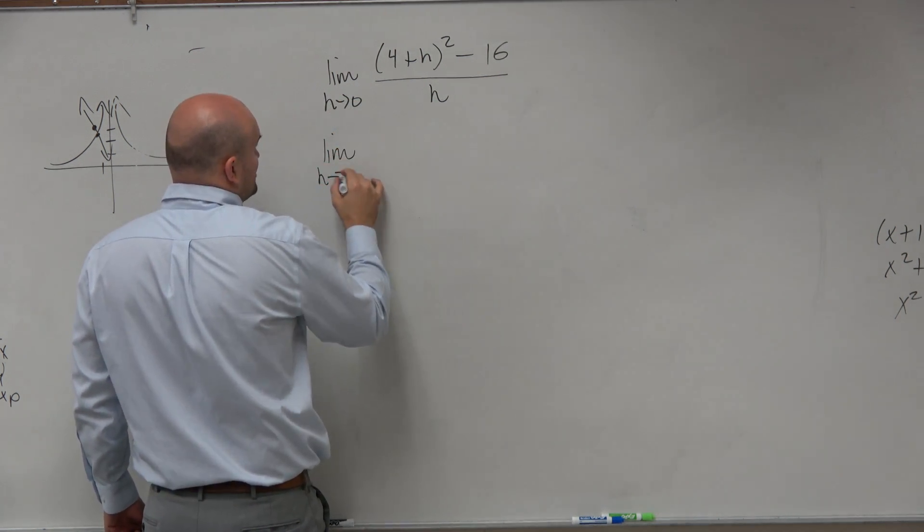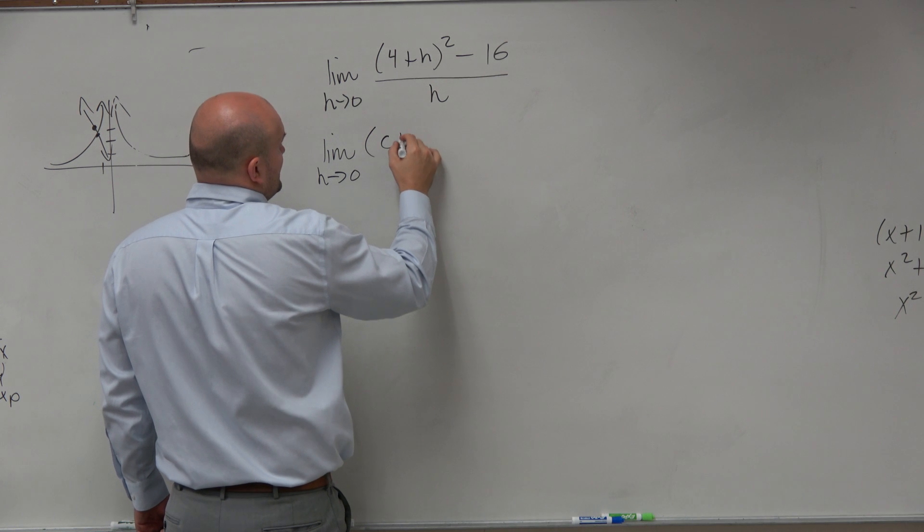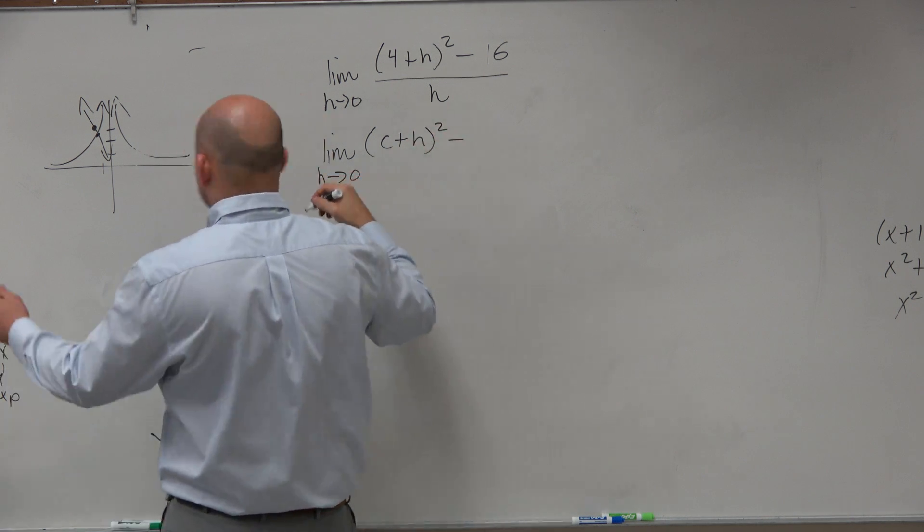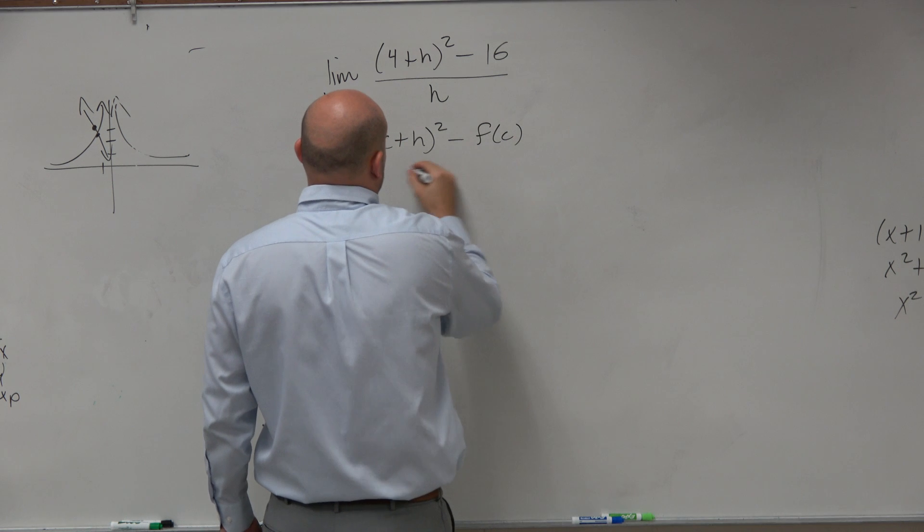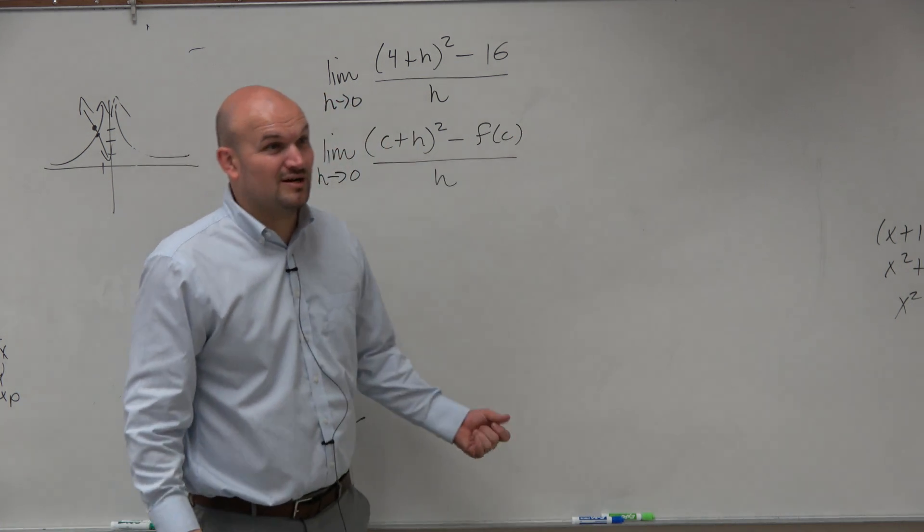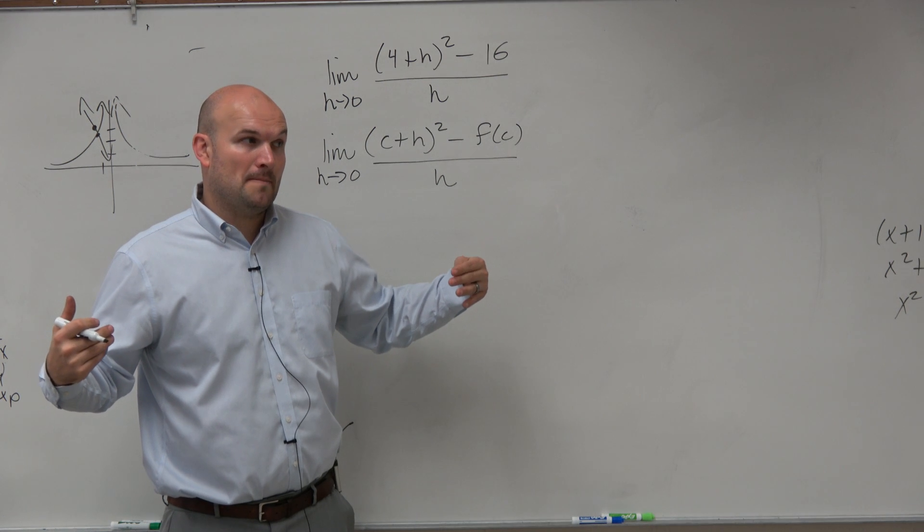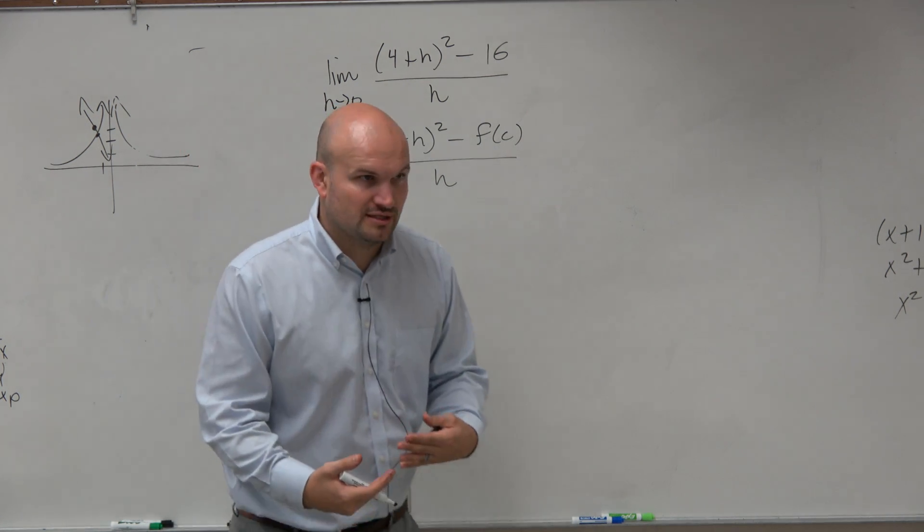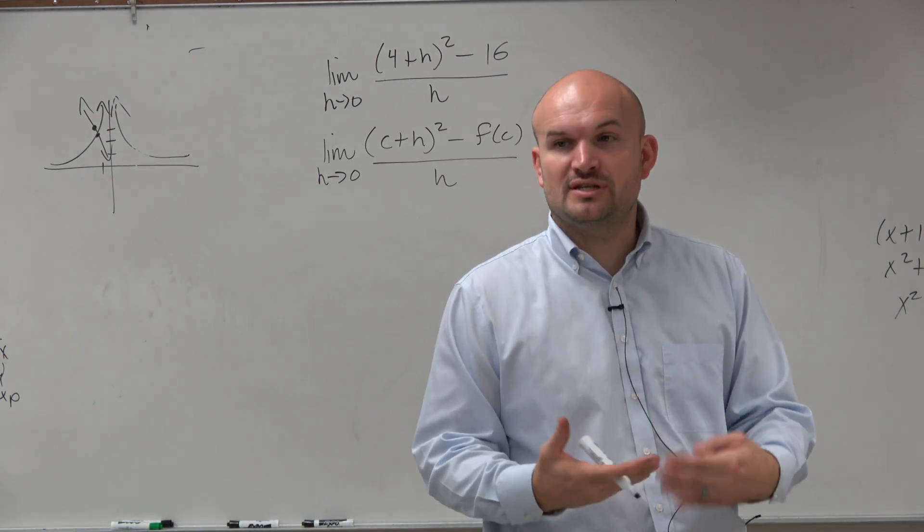Limit as H approaches zero of C plus H squared minus F of C all over H. Yeah, that kind of looks like, you know, that could work. So now what I need to do is kind of figure out, so what is this function that I am doing?